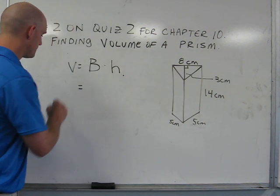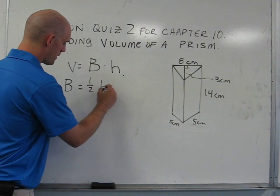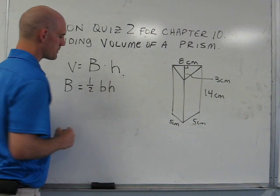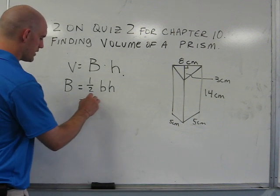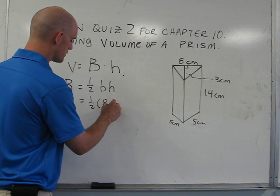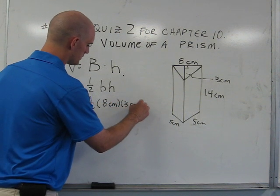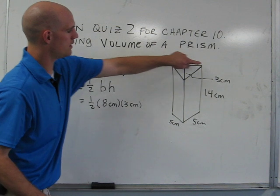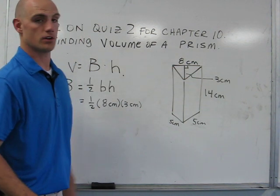So for the base, we're going to take one-half, the base of the triangle, and multiply it times the height of the triangle. In doing that, we get one-half times 8 centimeters times 3 centimeters to find the area of the base of the prism, or the triangle.